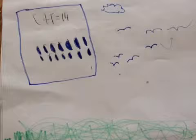Seven plus seven equals fourteen. Seven dots and seven dots will equal fourteen. Seven plus seven equals fourteen.